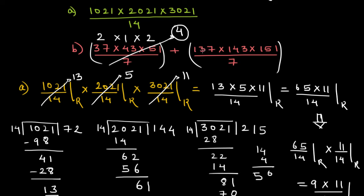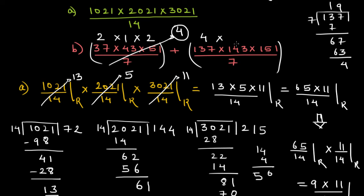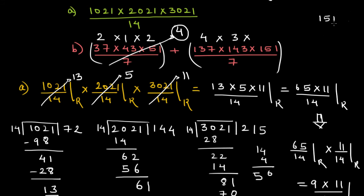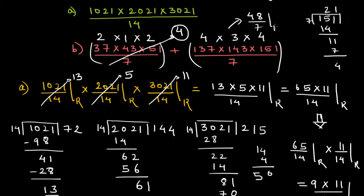Dividing 137 by 7: 7 times 1 is 7, then 7 times 9 is 63, leaving remainder 4. Dividing 140 by 7: 140 is divisible by 7, so remainder is 0 — giving remainder 3 for that term. Dividing 151 by 7: 7 times 2 is 14, 7 times 1 is 7, leaving remainder 4. Multiplying these: 4 times 4 is 16, times 3 is 48. Dividing 48 by 7: 7 times 6 is 42, remainder is 6.